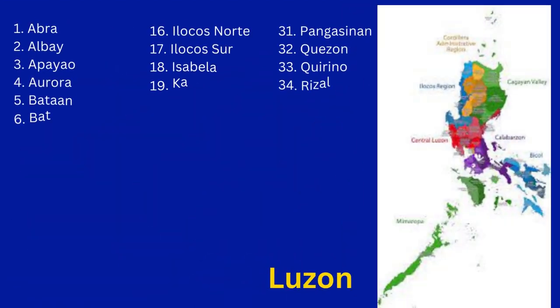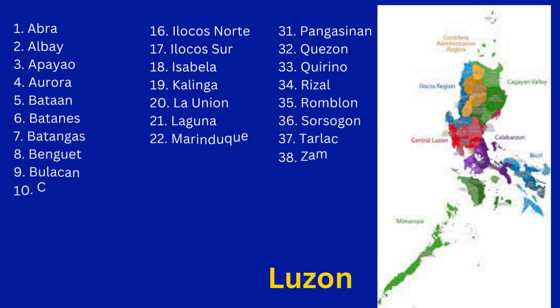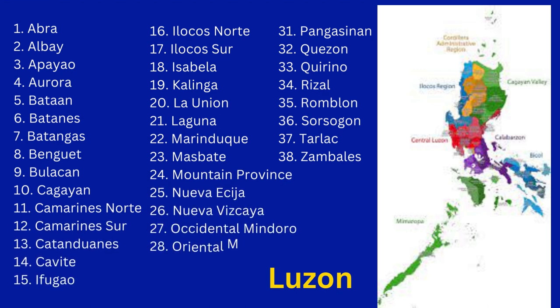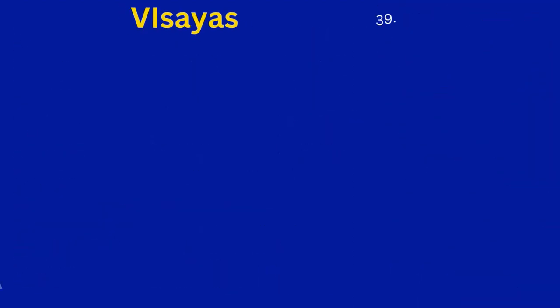Let's take a look at the list of provinces in the Luzon Island. We have Abra, Albay, Apayaw, Aurora, Bataan, Batanes, Batangas, Binguet, Bulacan, Cagayan, Camarines Norte, Camarines Sur, Catanduanes, Cavite, Ifugao, Ilocos Norte, Ilocos Sur, Isabela, Kalinga, La Union, Laguna, Marinduque, Masbate, Mountain Province, Nueva Ecija, Nueva Vizcaya, Occidental Mindoro, Oriental Mindoro, Palawan, Pampanga, Pangasinan, Quezon, Quirino, Rizal, Romblon, Sorsogon, Tarlac, and Zambales.